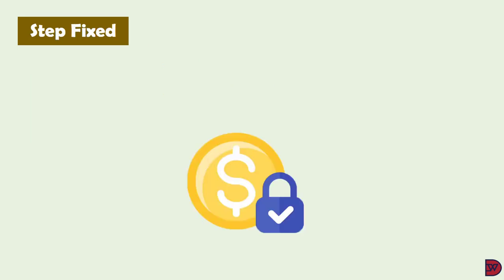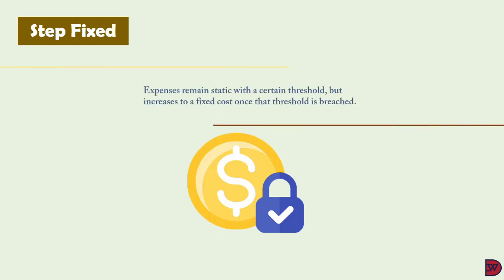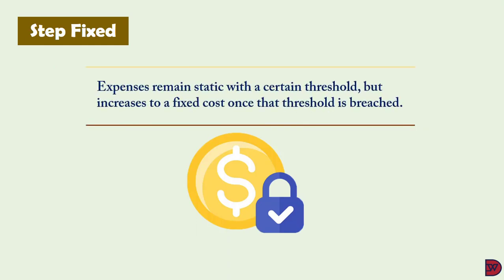Another type of cost behavior is the step fixed cost. A step fixed cost does not change within certain high and low thresholds of activity, but changes when those thresholds are breached. When the cost changes as a result of a breach in threshold, a new set of high and low activity thresholds will then apply, within which the fixed cost will not change.